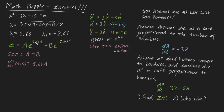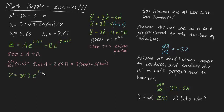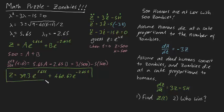dZ/dt at t equals zero equals 5.65A minus 2.65B. We also know from our original equation that dZ/dt at t equals zero equals 3 times 500 minus 5 times 500. Solving the system for A and B gives Z equals 39.3 e to the 5.65t plus 460.67 e to the minus 2.65t. We've got an expression for the number of zombies with respect to time, and amazingly it involves the numerical constant e.